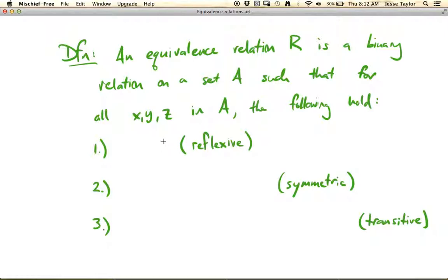Such that for everything in A, all X, Y, and Z in A, the following three conditions hold. And their names are the reflexive condition, the symmetric condition, and the transitive condition.